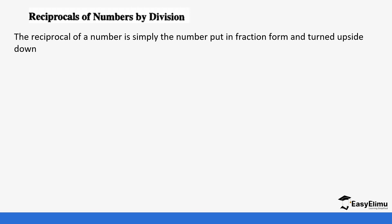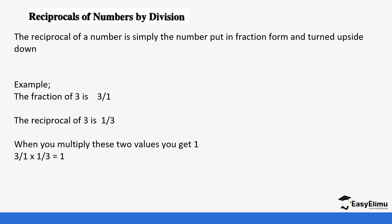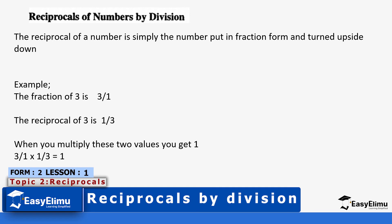When you talk about reciprocals, the reciprocal of a number is simply the number put in fraction form or turned upside down. For example, if you look at 3, a whole number always has a denominator of 1. So the whole number 3 is the same as 3 over 1. If you turn this upside down, it becomes 1 over 3. When you multiply 3 over 1 and 1 over 3, you end up getting 1 as a whole number.